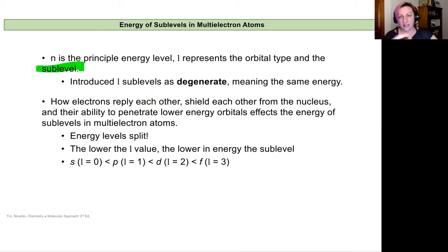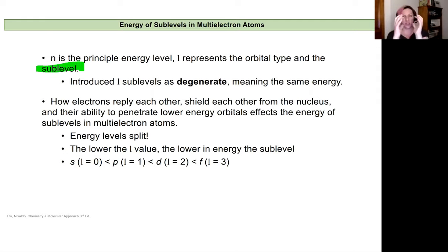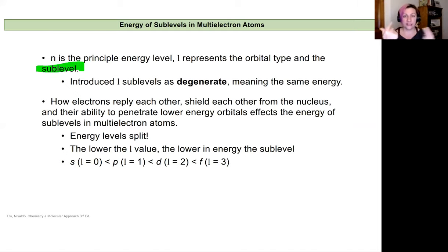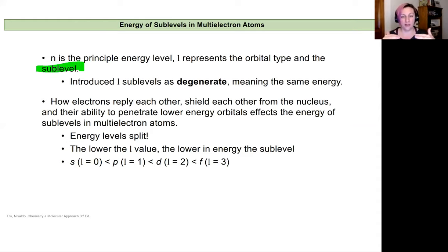Setting that aside, the key idea is that electrons existing in an atom occupy all these orbitals that we think of separately, but they're all in one shared space. Those electrons are all negative charges and they repel each other — like charges repel, opposite charges attract. As these electrons exist together repelling one another, they actually shield each other from the nucleus's pull, which is that positive-to-negative attractive force. An electron's ability to penetrate into lower energy orbitals and get closer to the nucleus affects the actual energy level or stability of that sub level.